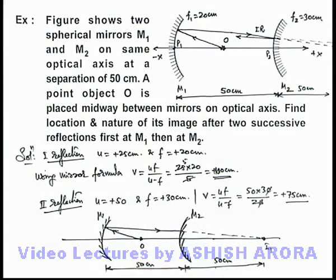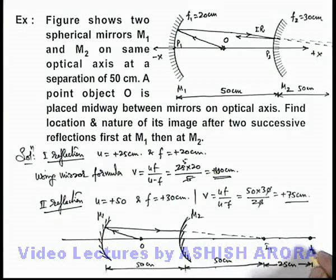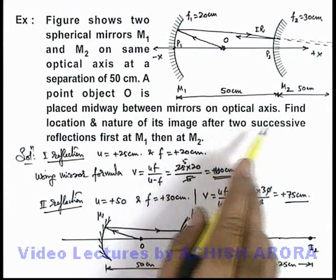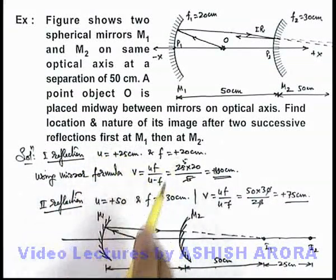After reflection, the image produced will be at a distance 75 centimeters from mirror M2, that is further 25 centimeters from I1. Here I1 is acting as a virtual object for mirror M2. This is the second and the final image which we are required to find after two successive reflections, first at M1 then at M2.